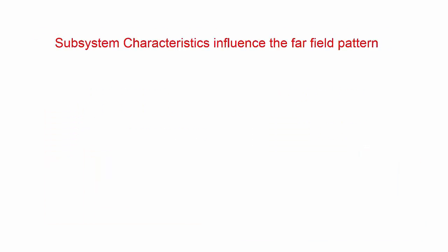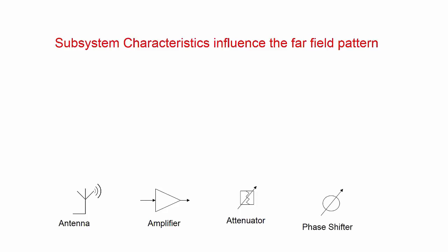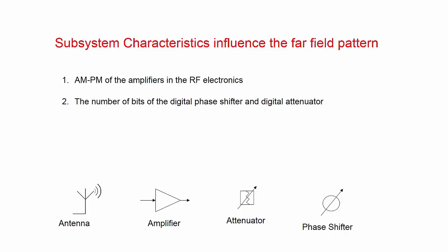Having understood the importance of the far-field and its characteristics, we need to understand various factors that influence the far-field pattern as part of the design process. The subsystem characteristics and the integration of the subsystems can have a profound influence on the far-field pattern. I'm going to talk about several critical factors: AM-to-PM of the amplifiers in the RF electronics, the number of bits of the digital phase shifter and the digital attenuator in the TR module, active impedance of the antenna elements — which can be a function of frequency and scan angle — and finally, random antenna element failures.